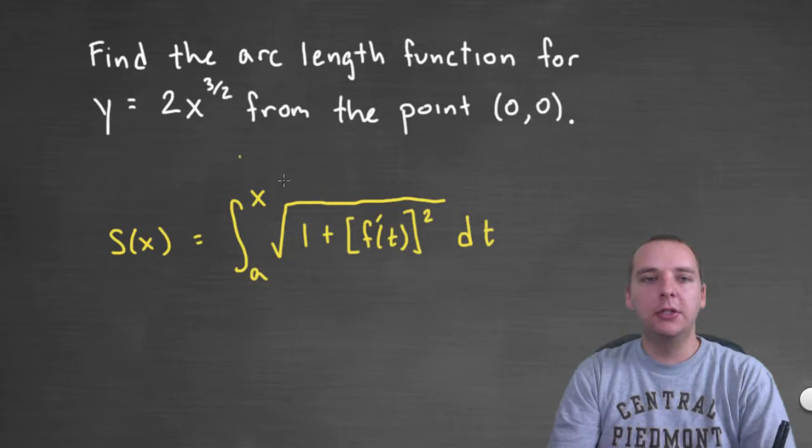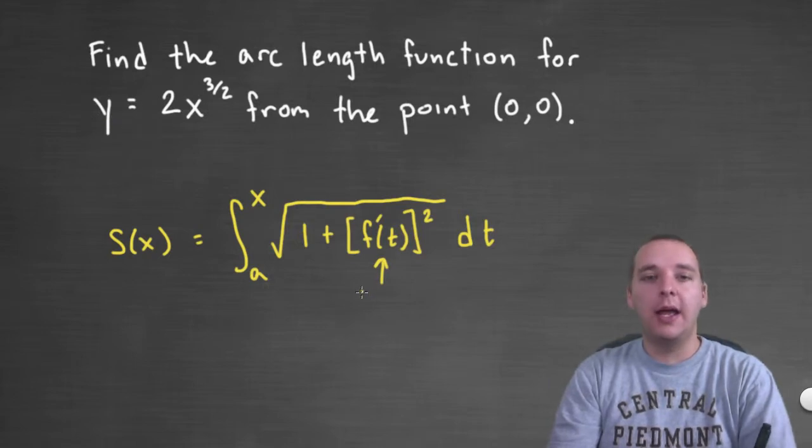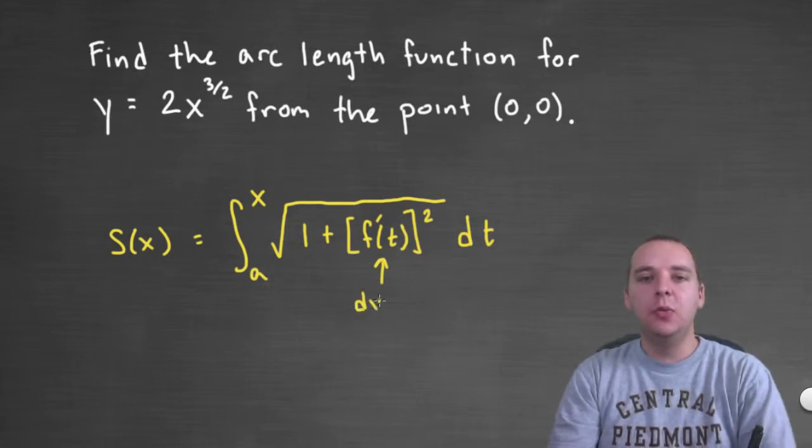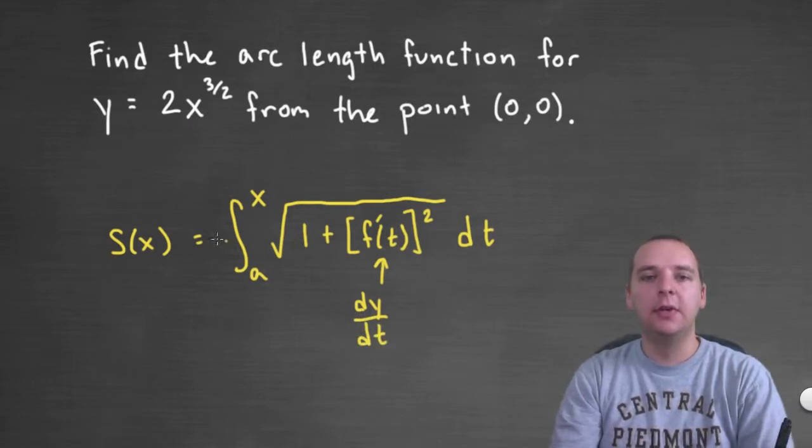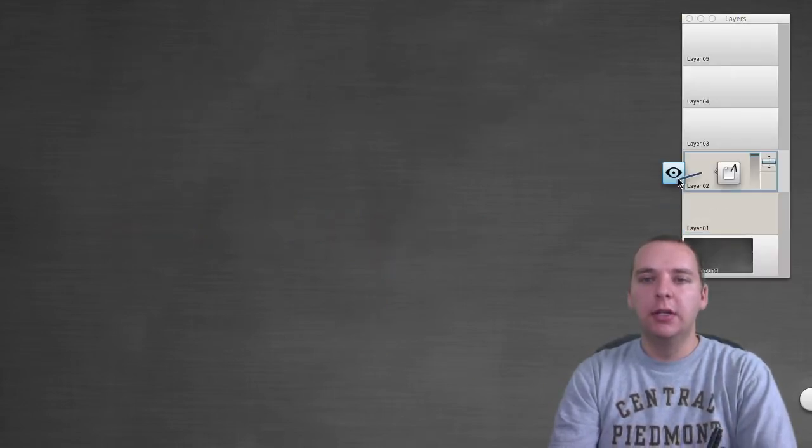But basically it's just plug and chug pretty much. So our starting point is at zero and our function is not written with the notation f of x it's y but that's okay. We can make a slight modification here. This is f prime of t if this is written in terms of y and x we can say dy dt after we write this as a function of t instead. So we'll make that small change but other than that it should be pretty straightforward. So let's give it a shot.